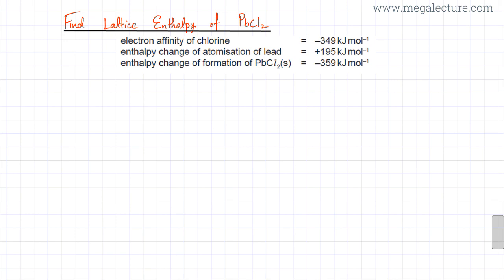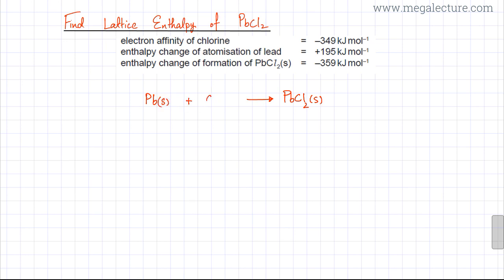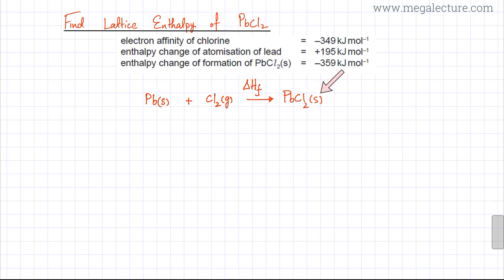We start with the enthalpy of formation of PbCl2: one mole of solid PbCl2 (where Pb is 2+) is formed from its constituent elements — lead in solid state and chlorine, which is a diatomic molecule Cl2 in gaseous state at standard conditions. This equation represents the enthalpy change of formation of PbCl2, our first path. We then apply Hess's law and construct a Born-Haber cycle to find another path from reactants to the product.